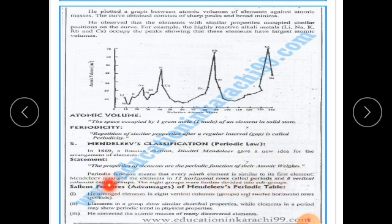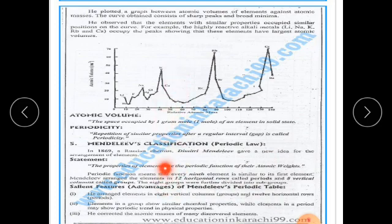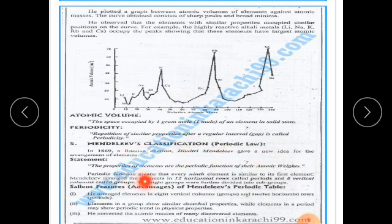Mendeleev's arrangement of elements: he described 12 horizontal rows called periods, and vertical arrangements called groups. Horizontal rows go left to right (periods), and vertical arrangement goes top to bottom (groups).